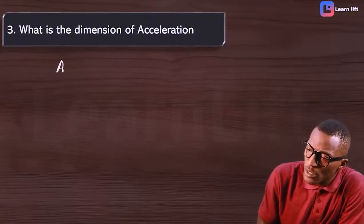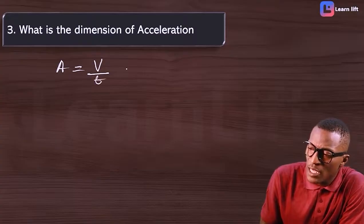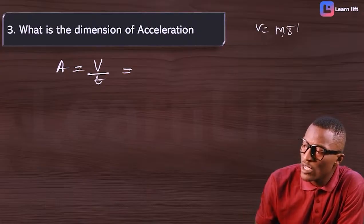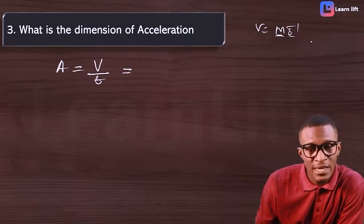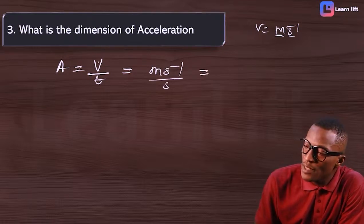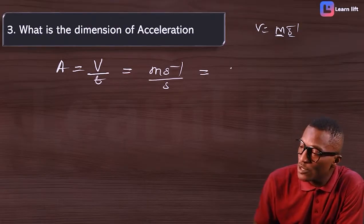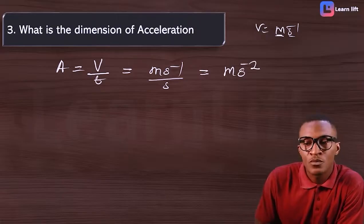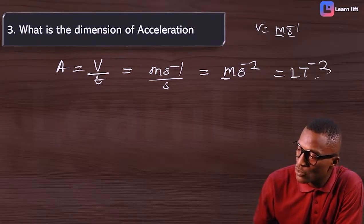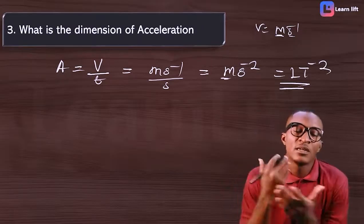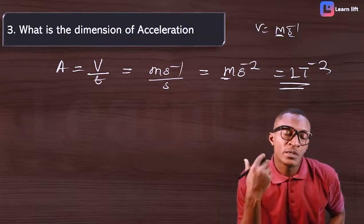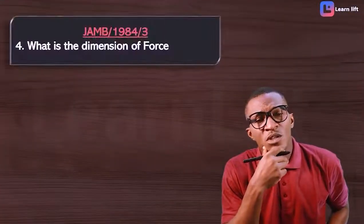For acceleration: acceleration equals velocity over time. Velocity is ms⁻¹ — that's displacement over time — so we have ms⁻¹ over s, which gives ms⁻². In dimension, m is length L and s is time T, so acceleration has dimension LT⁻². Note: do not confuse meter (length) with mass, which is kilogram.